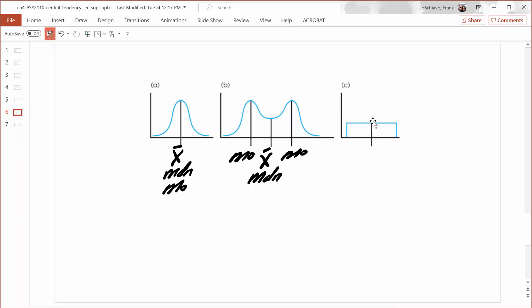Check out this last distribution right here. Just like the others, it's symmetrical. But unlike the others, you don't see any peak, and that's because there's no mode. We call a distribution like this flat. We also call it uniform.